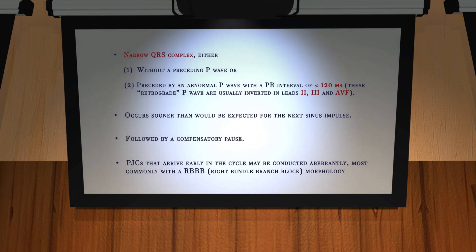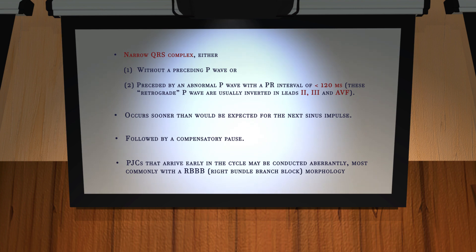The electrocardiographic features are as depicted here on this slide. Narrow QRS complex either without a preceding P wave, or preceded by an abnormal P wave with a PR interval of less than 120 ms. These retrograde P waves are usually inverted in leads 2, 3, and aVF. The beat occurs sooner than would be expected for the next sinus impulse, followed by a compensatory pause. PJCs that arrive early in the cycle may be conducted aberrantly, most commonly with an RBBB, or right bundle branch block morphology.